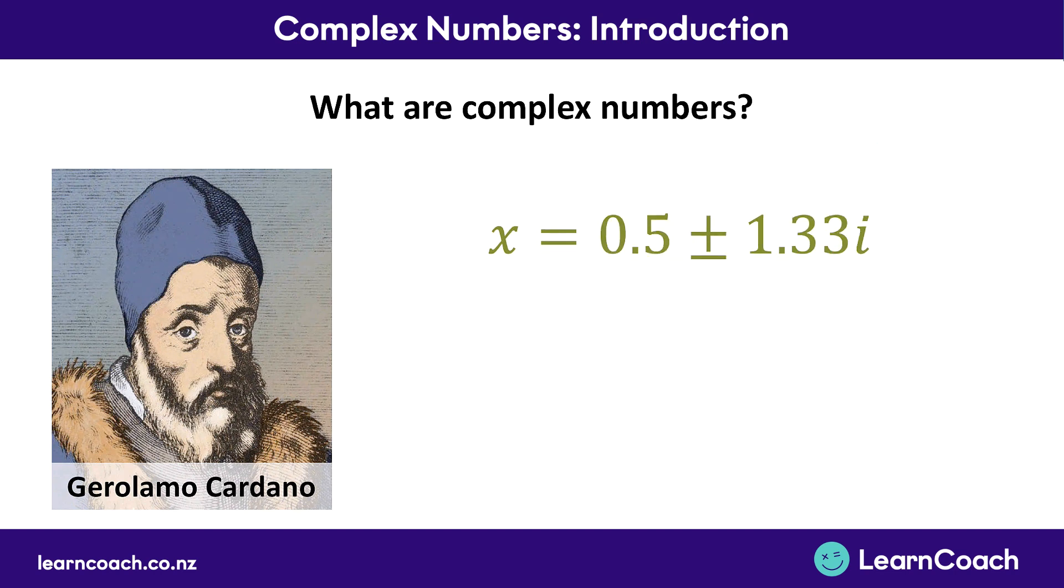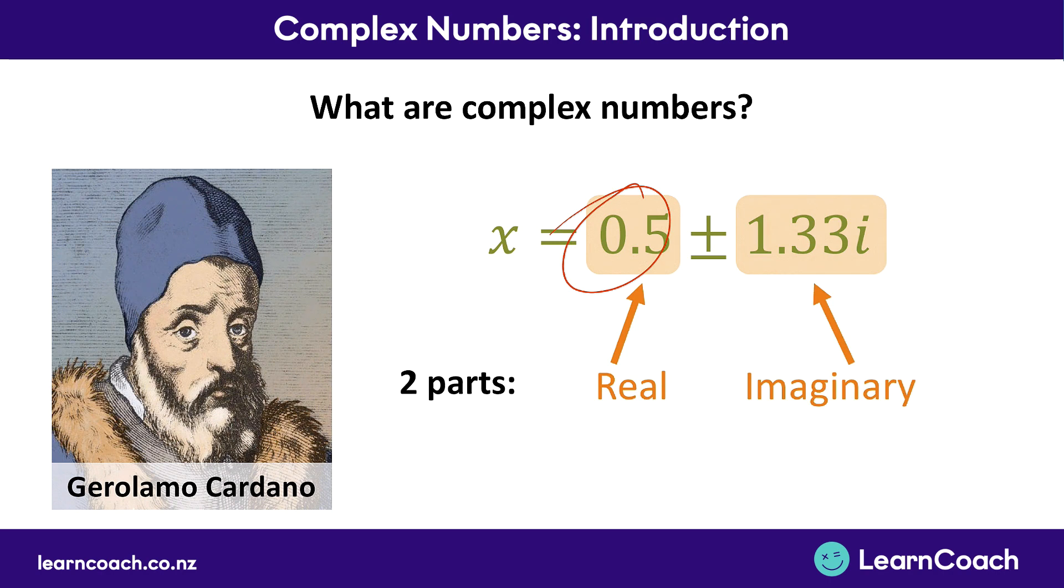Now if we look at this complex number here, there are two parts which make it up. The first is called a real part. 0.5 here is a real number, just like 10 or 556.2—they're real numbers. Whereas there's a second part which is imaginary. It's multiplied by this i, which is the same as saying the square root of negative 1.